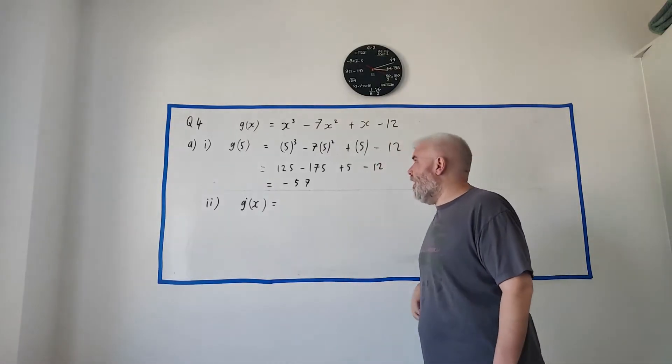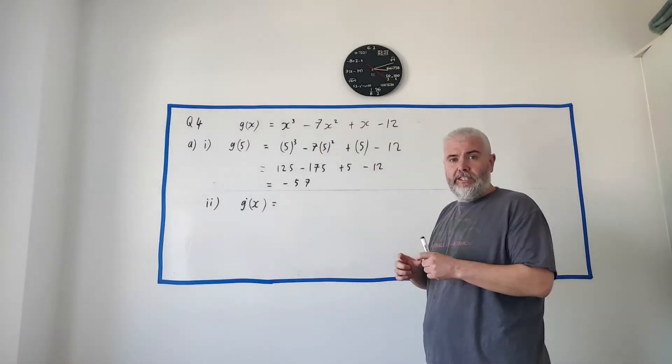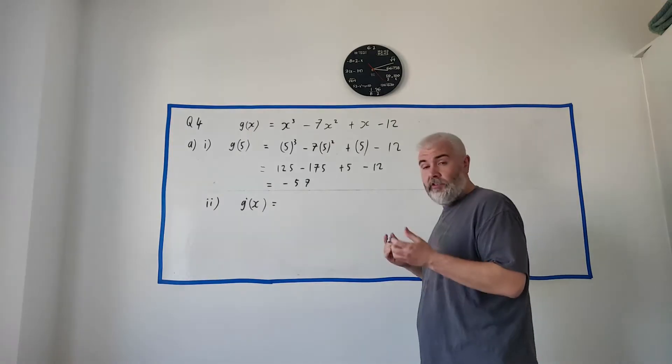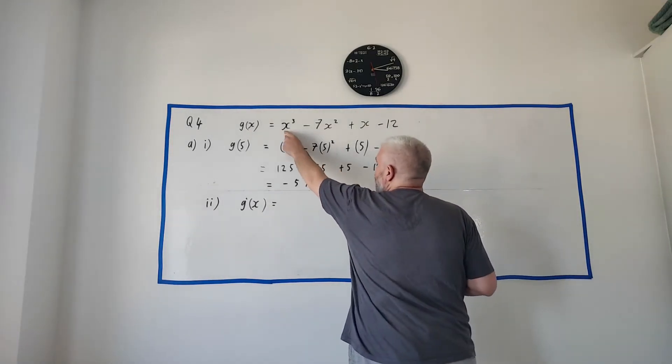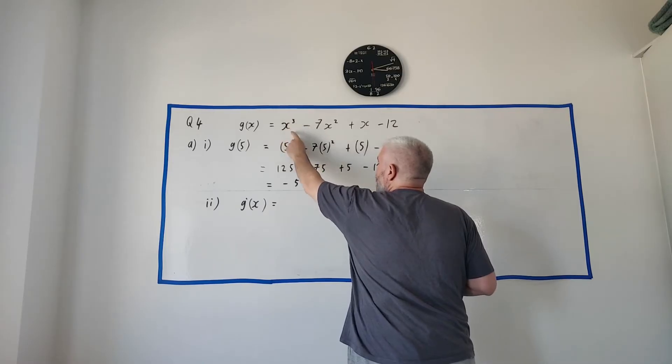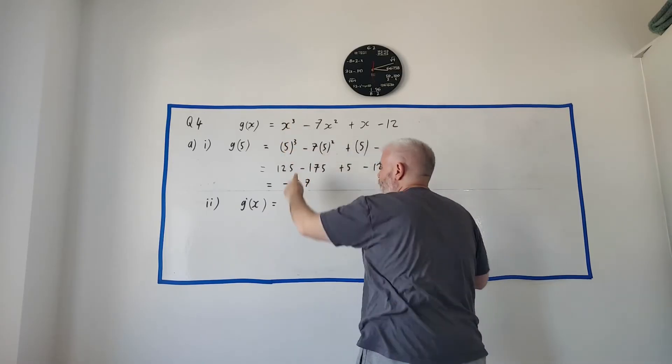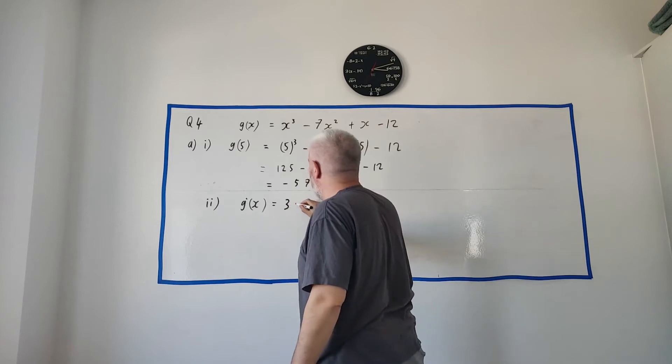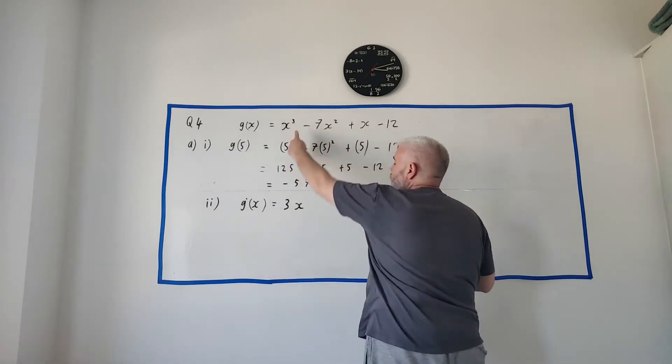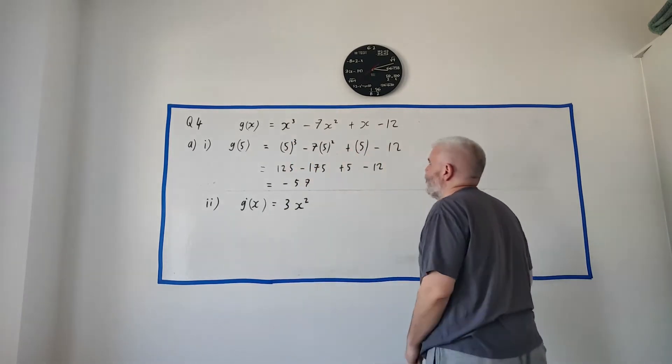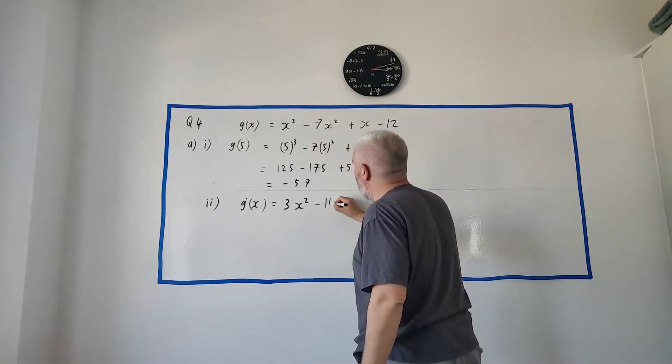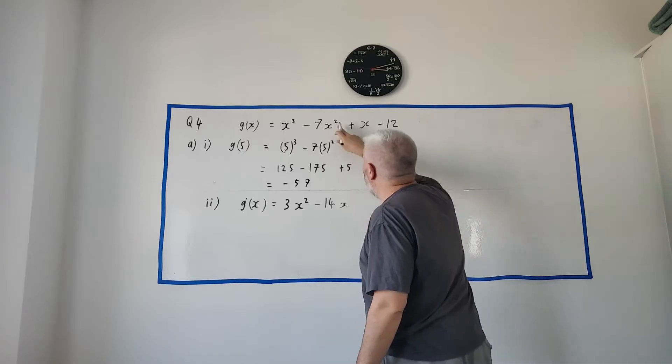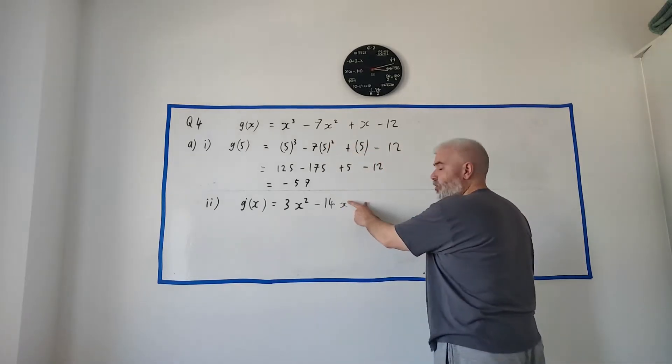So, practice will make perfect on this. And if you need a reminder, that rule is actually written in your tables book that you're allowed to take into your exam. So, the rule says, when we're differentiating something, x to the power of 3, we take the number that's up here, and we multiply it out front. So, 3x, and then we take 1 away from it. So, it becomes a 2.